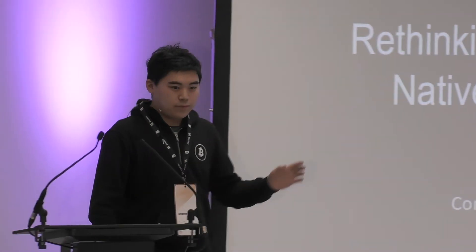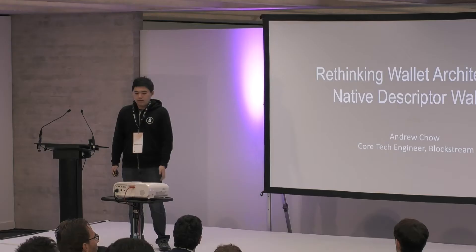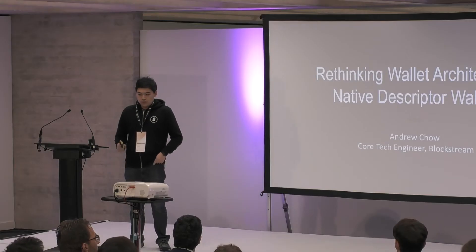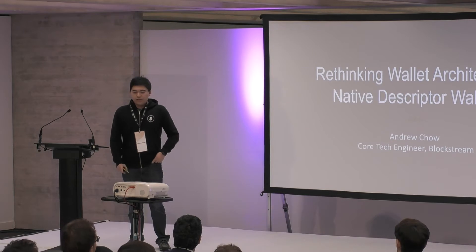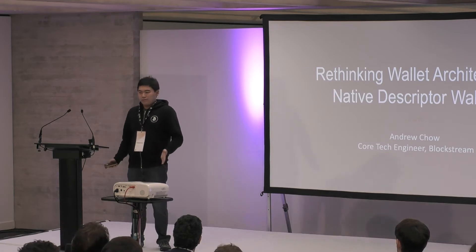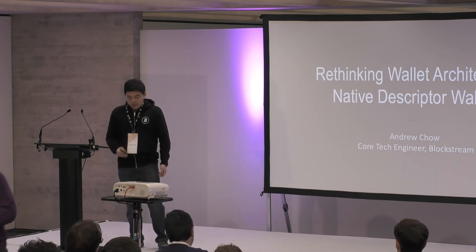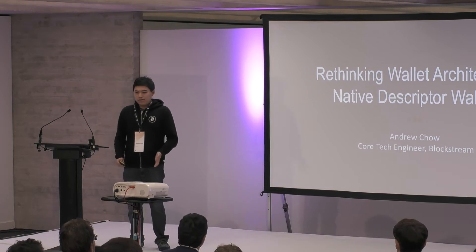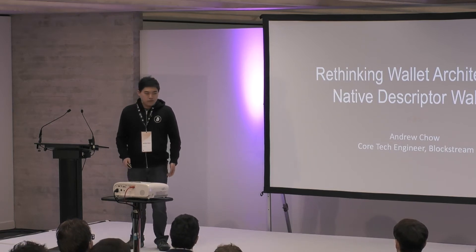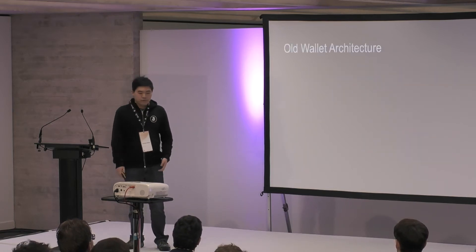Hi everyone. I'm Andrew Chow, an engineer at Blockstream and also a Bitcoin Core contributor working mostly on the Bitcoin Core wallet. Today I'm going to be talking about rethinking the wallet architecture with native descriptor wallets. But first, in order to understand why we need to rethink the wallet architecture, we need to understand what the current wallet does.